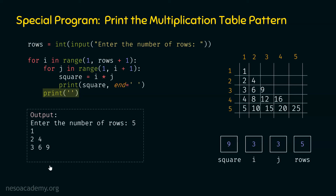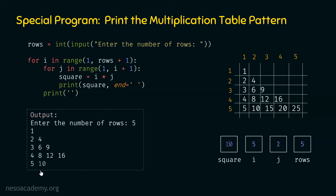The rest of the values print easily: row four gives 4, 8, 12, 16; row five gives 5, 10, 15, 20, 25 — which is the last value. This is the complete output, and it matches the desired output exactly.